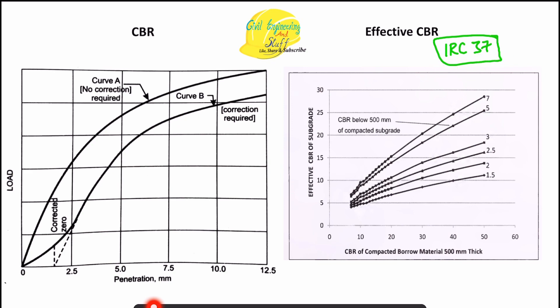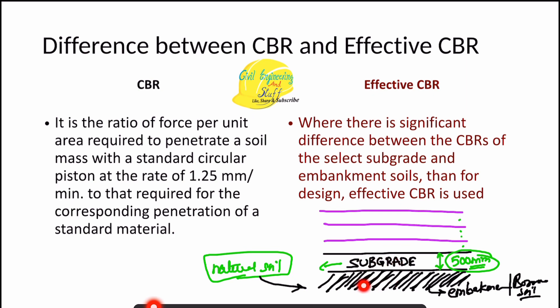In the IRC 37 graph for effective CBR, the x-axis represents the CBR of compacted borrow material of 500 mm thickness, and there is also the CBR below 500 mm of the compacted subgrade. They have formulated a correlation between the CBR of the soil subgrade and the CBR of the embankment or borrow soil below it. Conventionally, the soil subgrade and borrow soil are the same, with the subgrade being the top 500 mm.